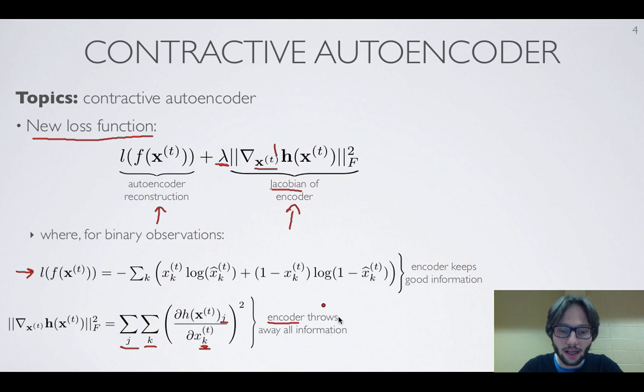Now, I can't have a hidden layer which is invariant to what the input value is and that also reconstructs well. I can't have an encoder that keeps information and throws information away at the same time.